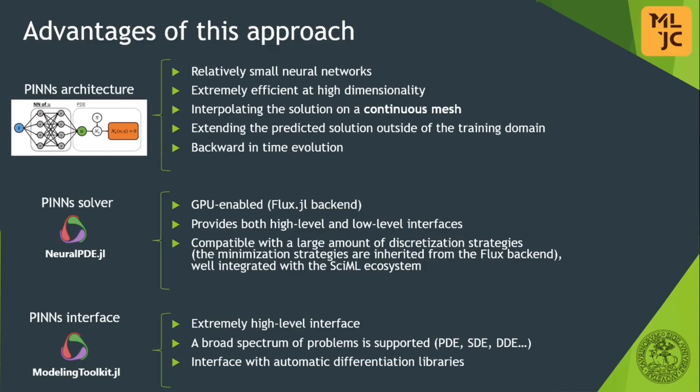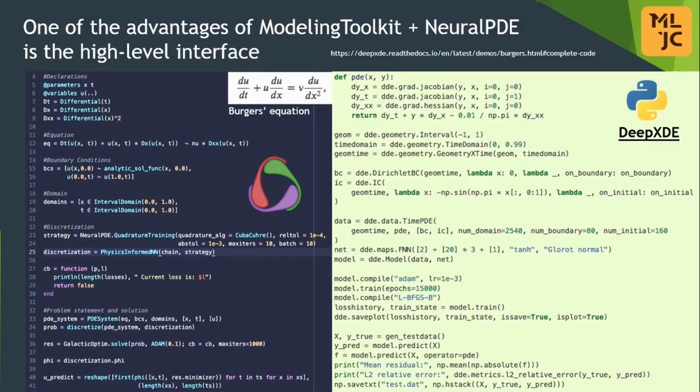ModelingToolkit has a very high-level interface for PINNs, allowing us to handle a large class of problems, and is easily interfaced with automatic differentiation libraries. The usage of a high-level interface is a key advantage of the ModelingToolkit and NeuralPDE libraries. This is crucial when the equations are complex and have a lot of parameters, overcoming the need for writing a custom solver for every problem — a task that is very time-consuming and a potential source of errors.